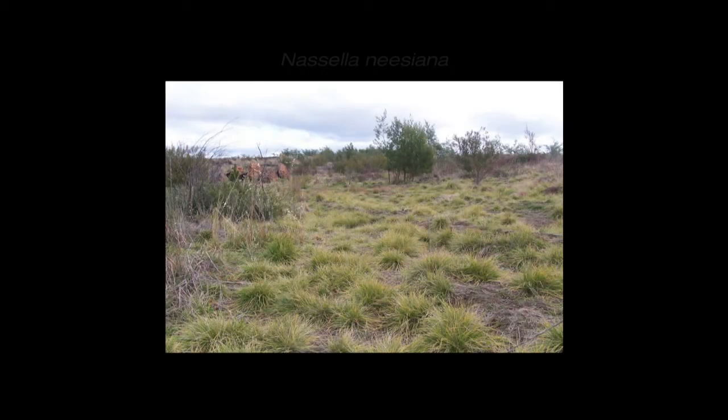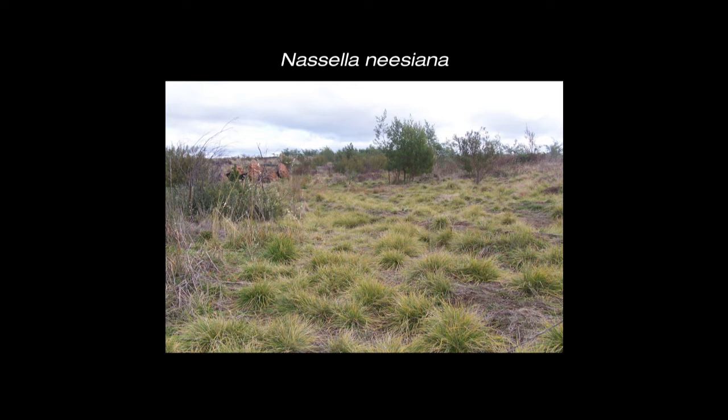Chilean needle grass, or Nassella neesiana, is a perennial tussock-forming grass native to South America. It has become a serious environmental and agricultural weed throughout southeastern Australia.